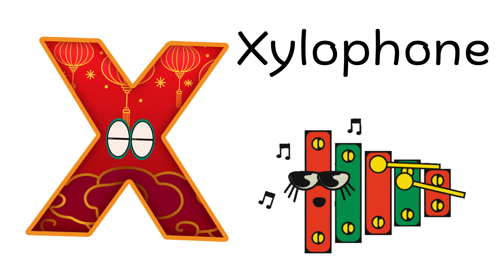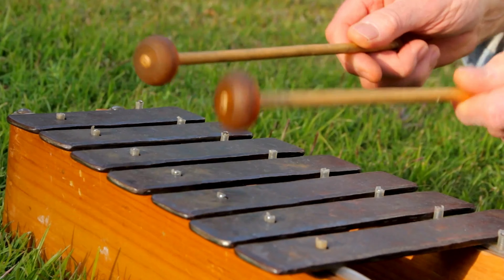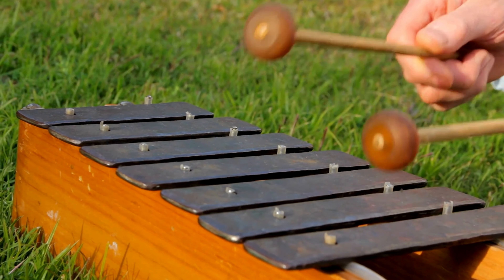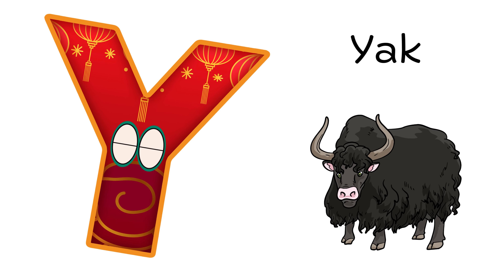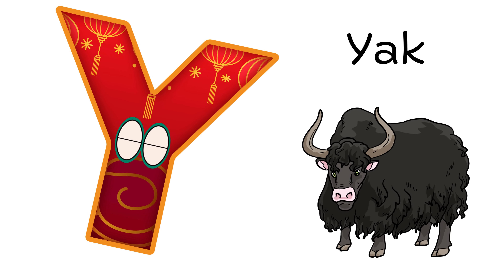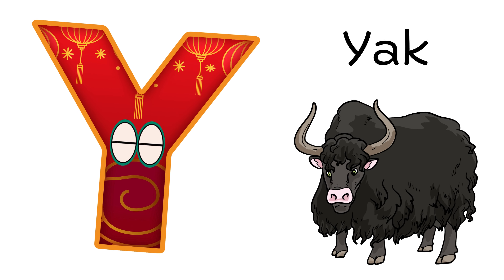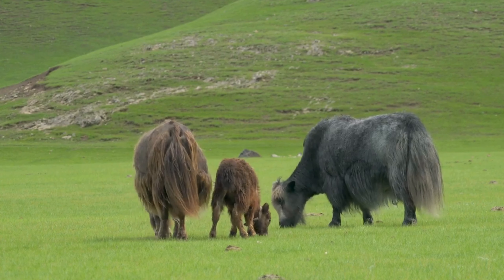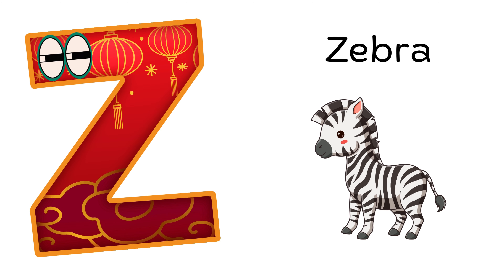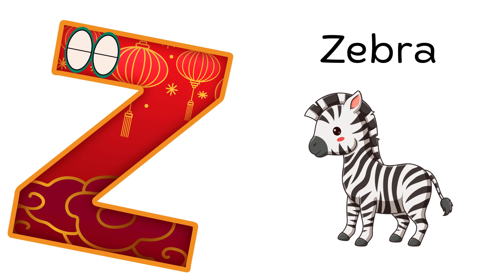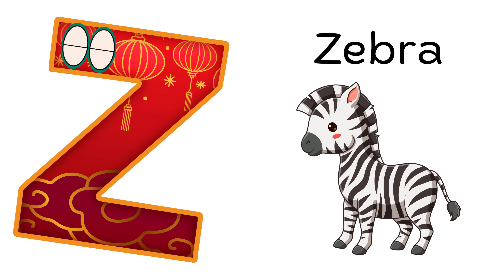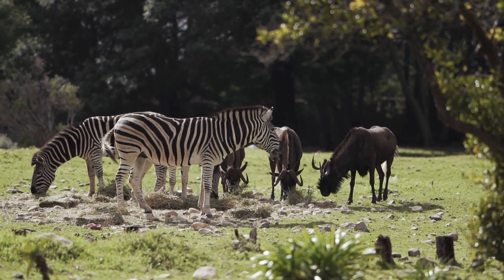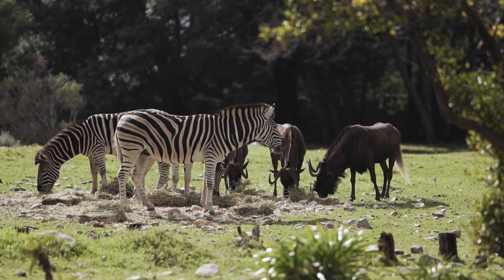X is for Xylophone. X, X, Xylophone, X, X, Xylophone, X, Xylophone. Y is for Yak. Y, Y, Yak, Y, Y, Yak, Y, Yak. Z is for Zebra. Z, Z, Zebra, Z, Z, Zebra, Z, Zebra.